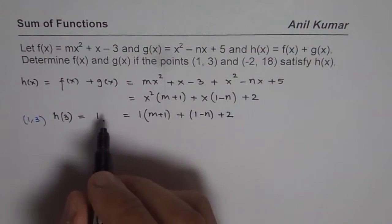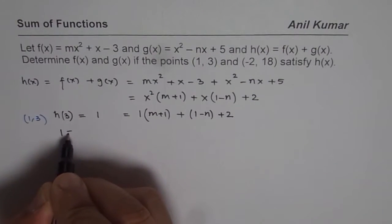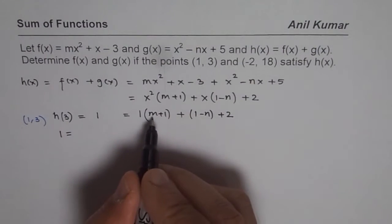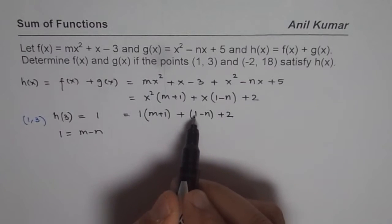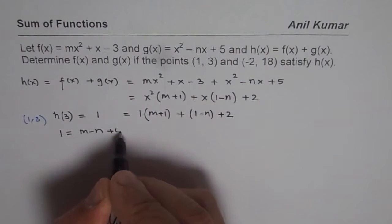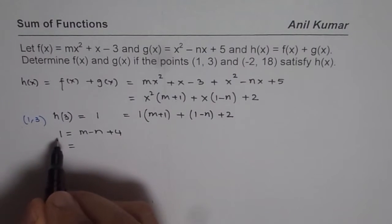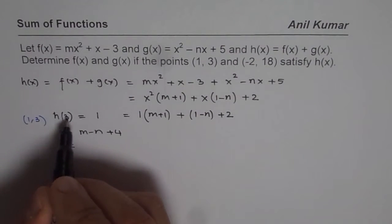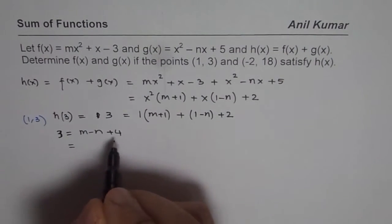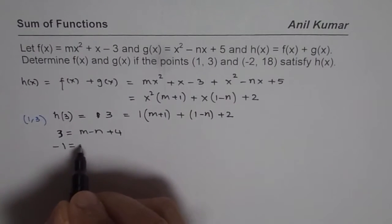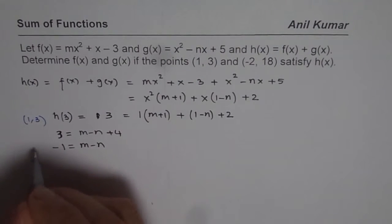Bringing the constants together: 1 plus 1 plus 2 equals 4. So we have 3 equals m plus 1 minus n plus 4, which gives 3 minus 4 equals m minus n, so minus 1 equals m minus n. Let us call this equation 2.